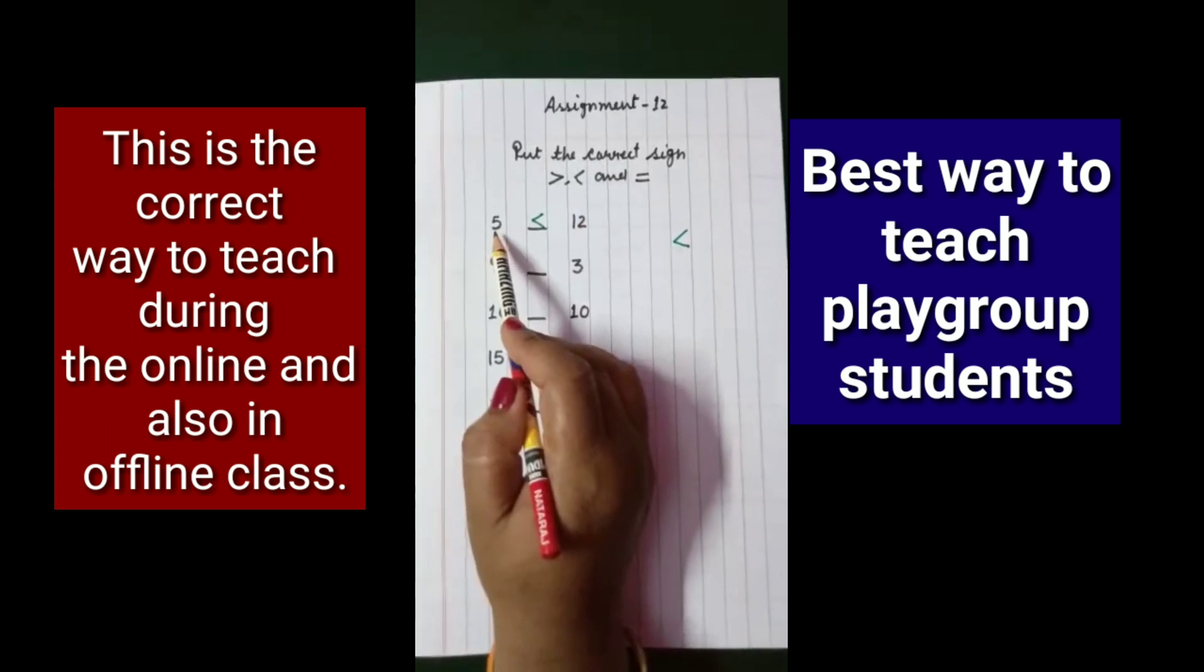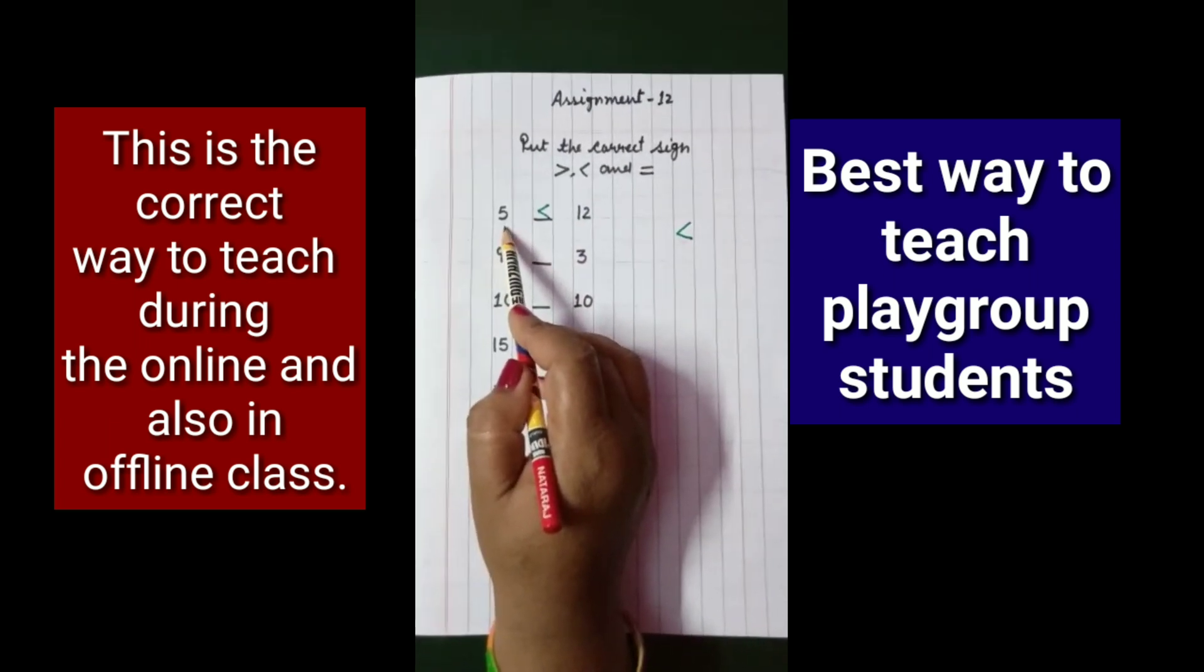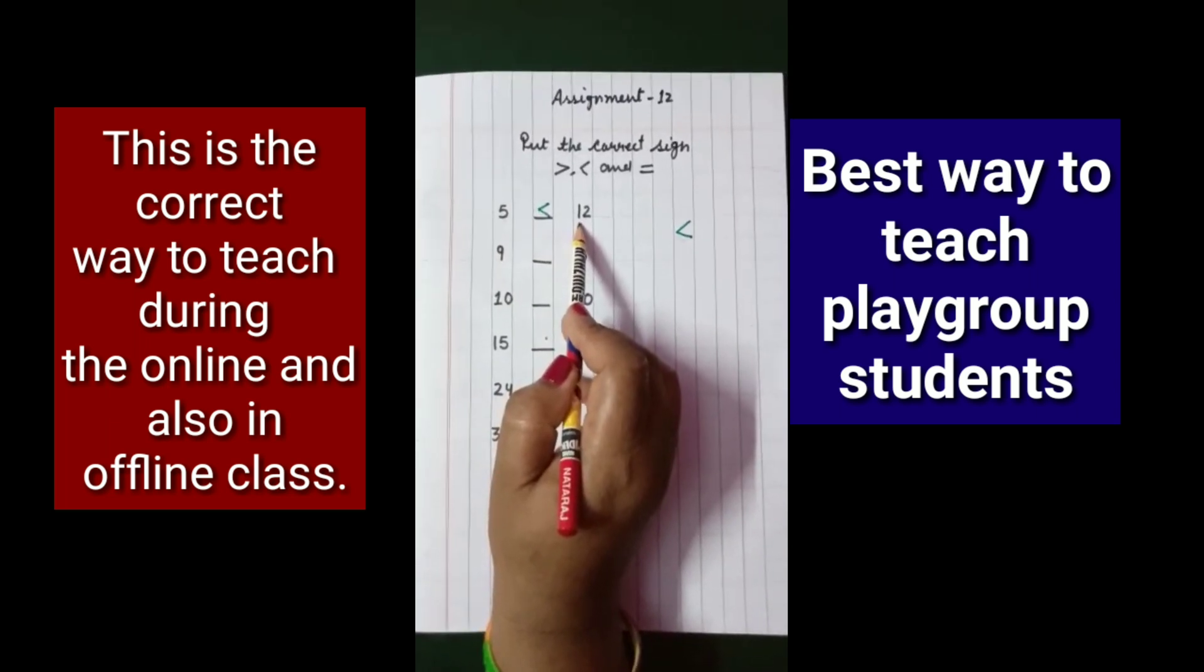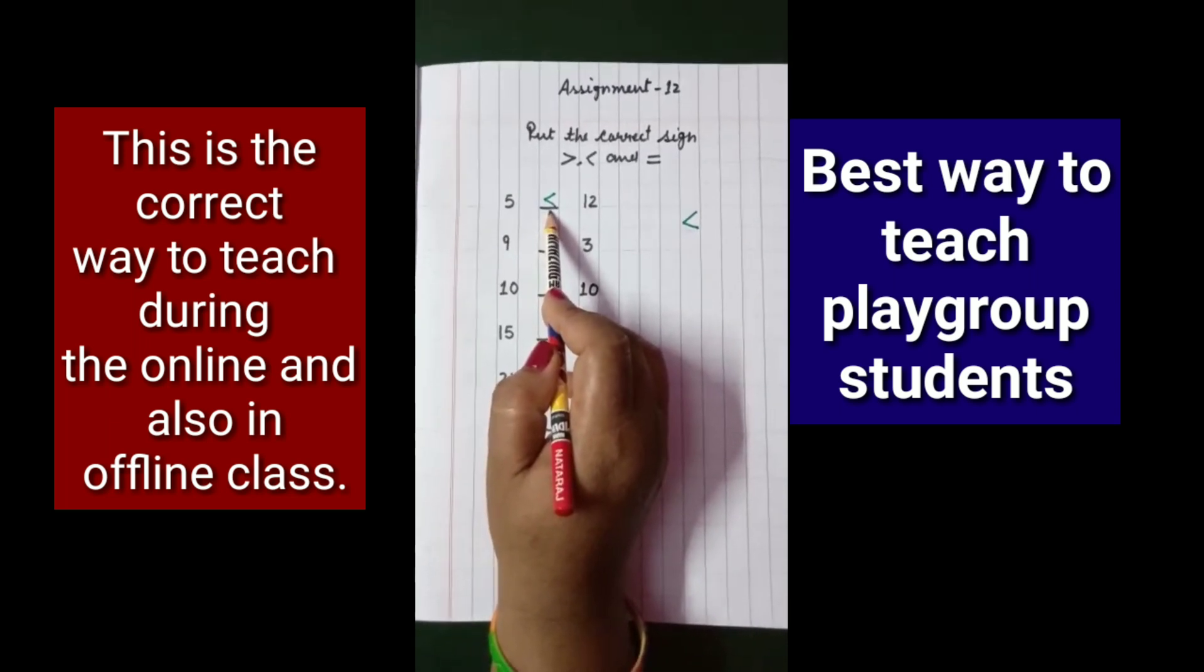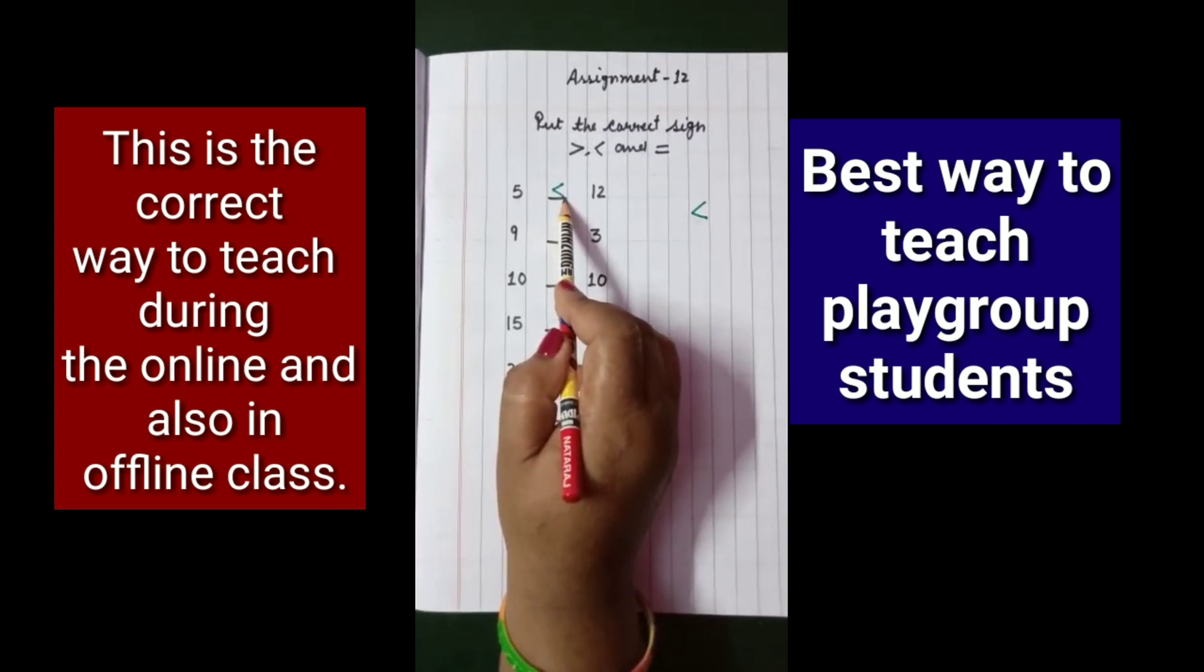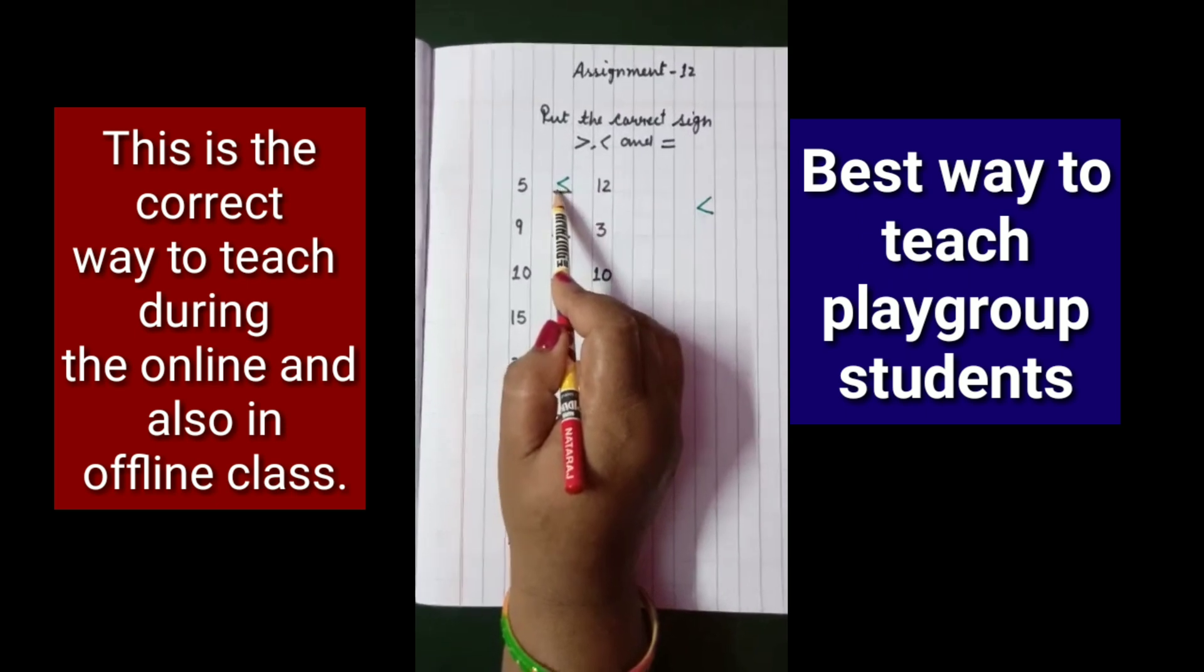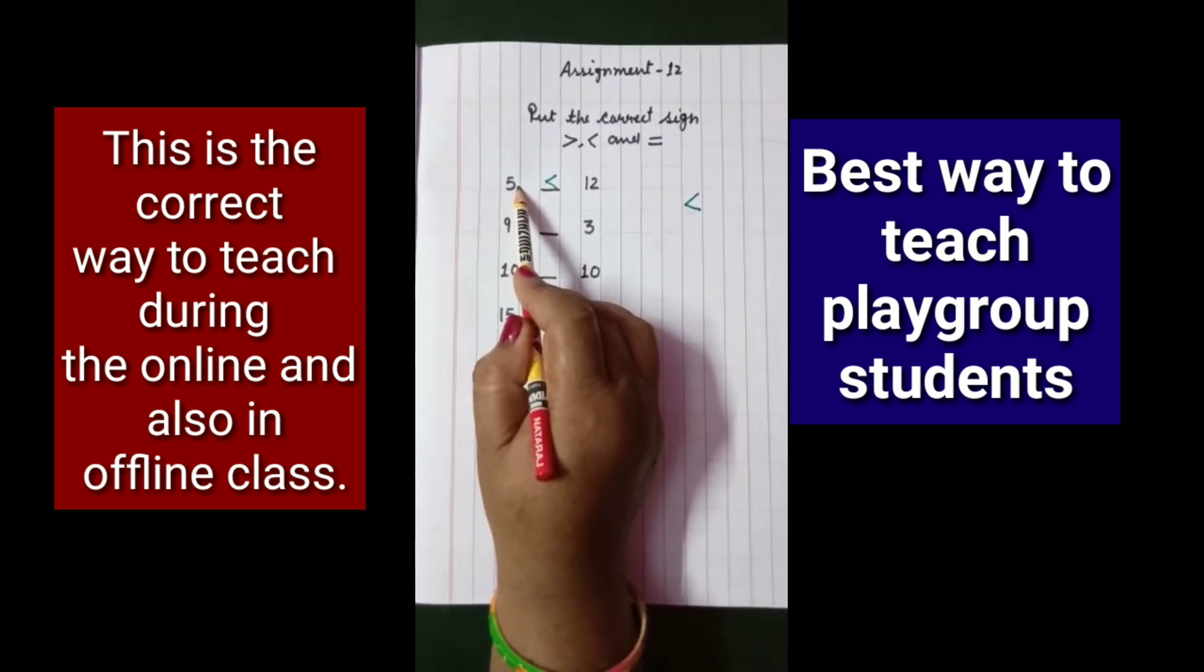Now we have two numbers, one is 5 and the other is 12. 5 is the smaller one and 12 is the bigger one. We use the sign to tell us which number is bigger and smaller. The open mouth faces the 12 because it is the bigger one and the point or tail faces the 5 because it is the smaller one.